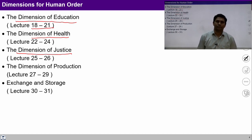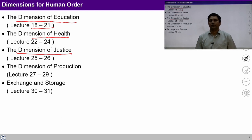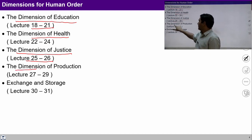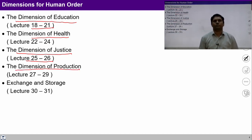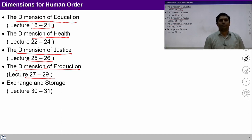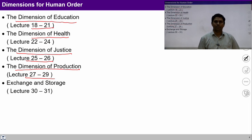Then we talked about the dimension of justice from lectures 25 to 26, where we talked about the importance of this dimension for harmonious society, relationship, established values, expressed values, and conditions. Then we talked about the dimension of production in lectures 27 to 29, where we talked about types of production, need of production, evaluation of production, critical analysis of the present production system, and policies about the production system.